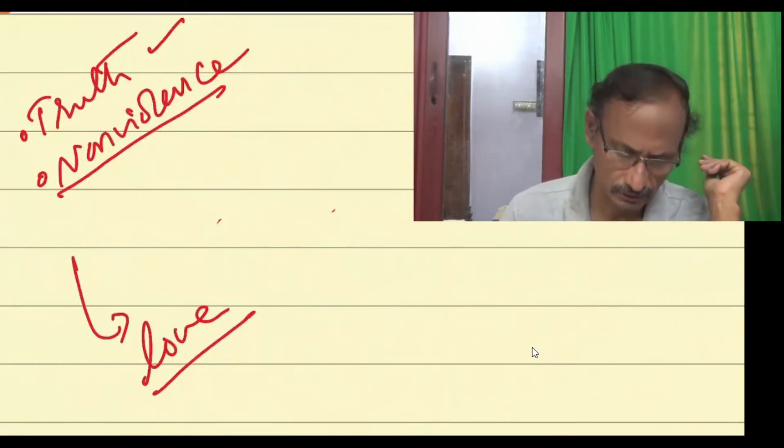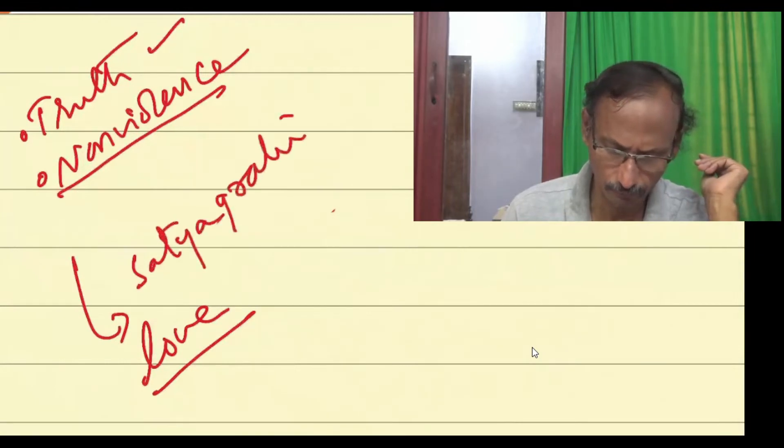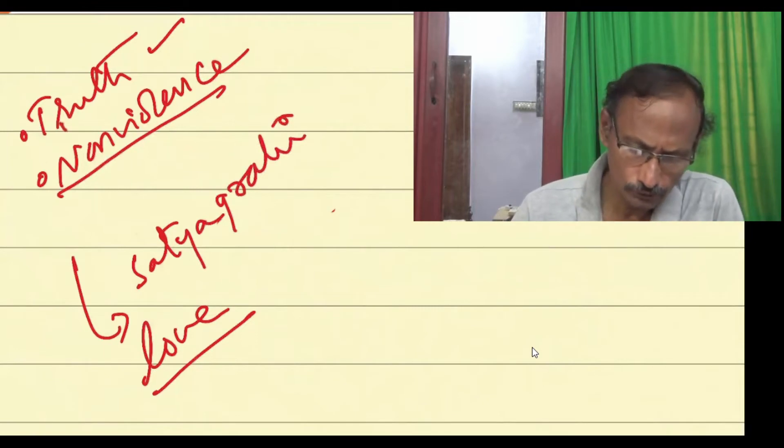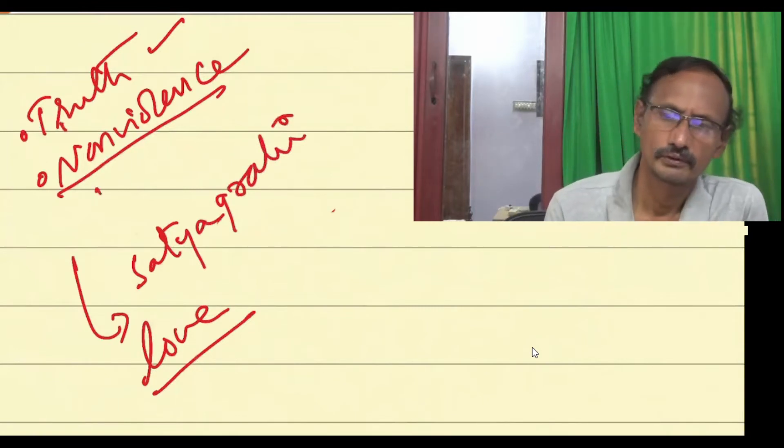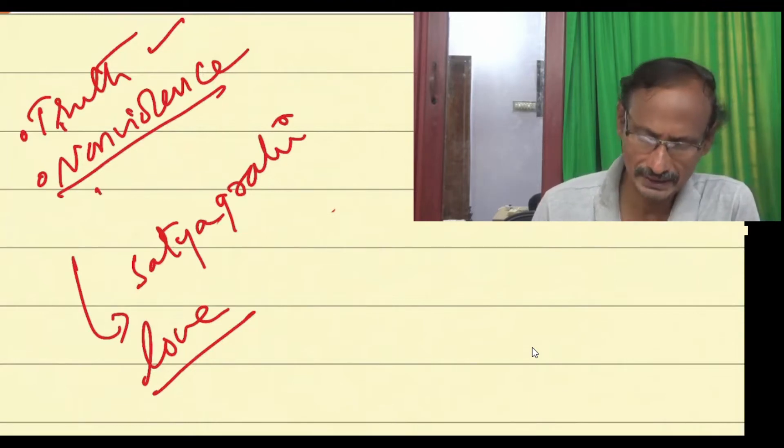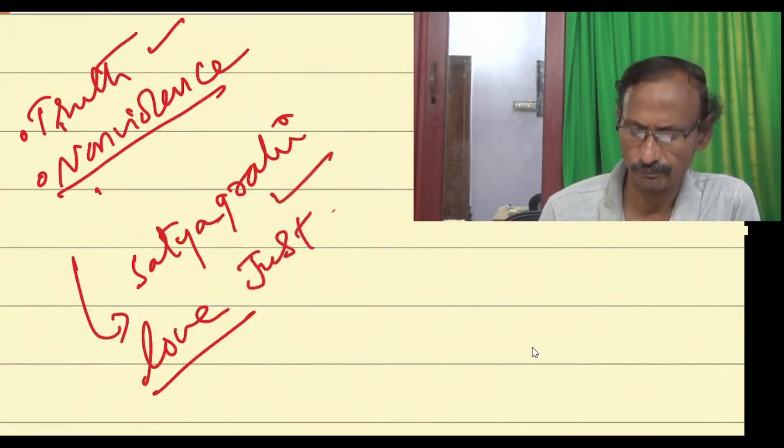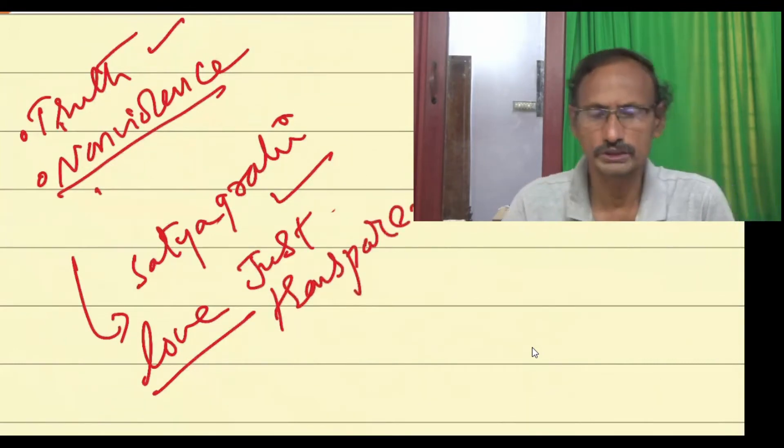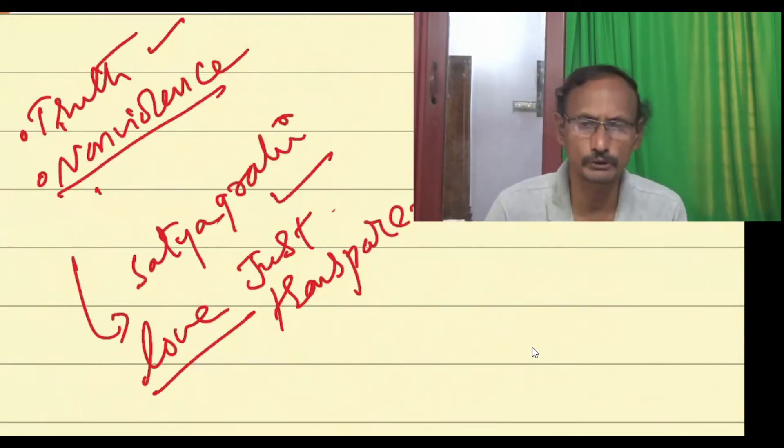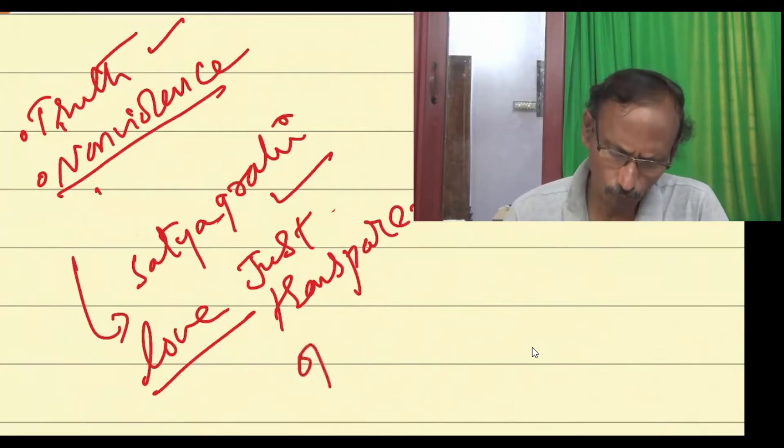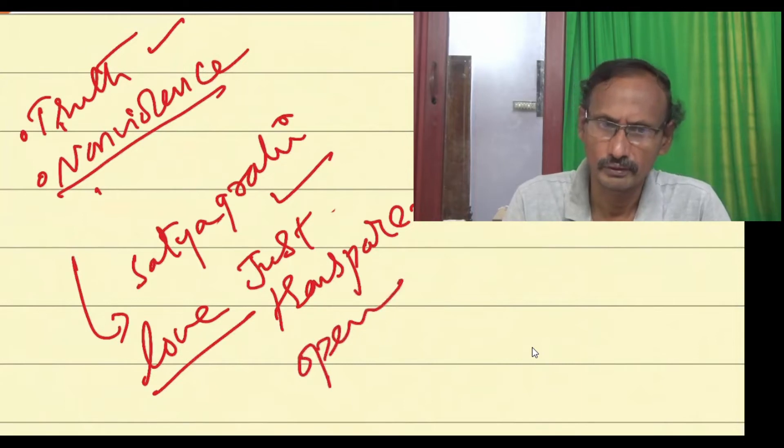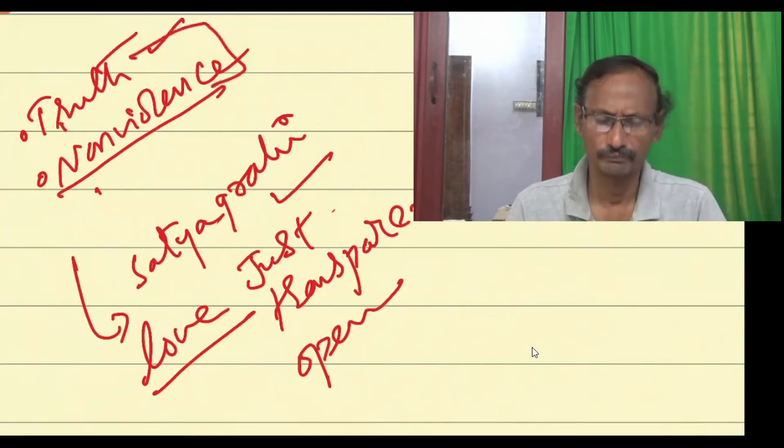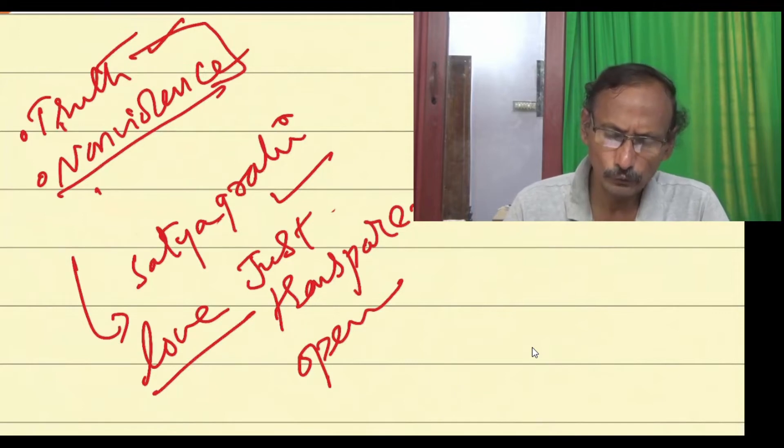The person who is resisting, who is a satyagrahi, should follow both truth and non-violence. He is expected to be just in his demand and transparent—no gimmicks, no games. To Gandhi, both truth and non-violence are interlinked.